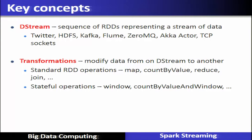Key concepts: A DStream is a sequence of RDDs representing the stream of data. DStreams are created from Twitter, HDFS, Kafka, Flume, and similar sources. Various transformations can be applied on a DStream to modify it from one form to another. Standard RDD transformations include map, countByValue, reduce, join, and so on. There are also stateful operations available as transformations, such as window operations and countByValueAndWindow.